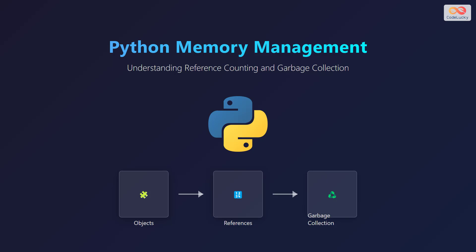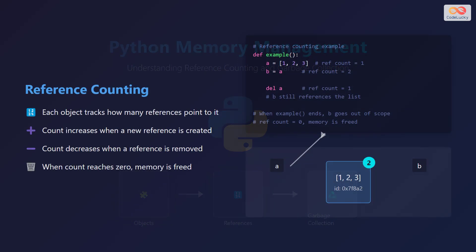Objects, references, and garbage collection are the core concepts of Python's memory management. Let's explore reference counting, the primary mechanism Python uses to manage memory.